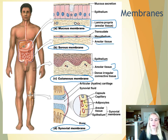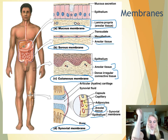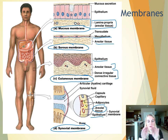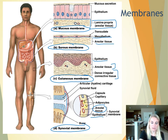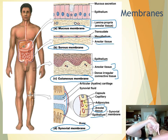Synovial membrane is an interesting one because it's not a true epithelium — the epithelium label is in quotes. It sits on areolar connective tissue and lines the synovial joint capsules of your movable joints — elbow, shoulder, wrist, fingers, neck, knee. These capsules surround the joints, and the synovial membrane secretes synovial fluid that lubricates the joints. So: mucous membranes in open passageways, serous in closed cavities, cutaneous is your skin, and synovial lines joint cavities.